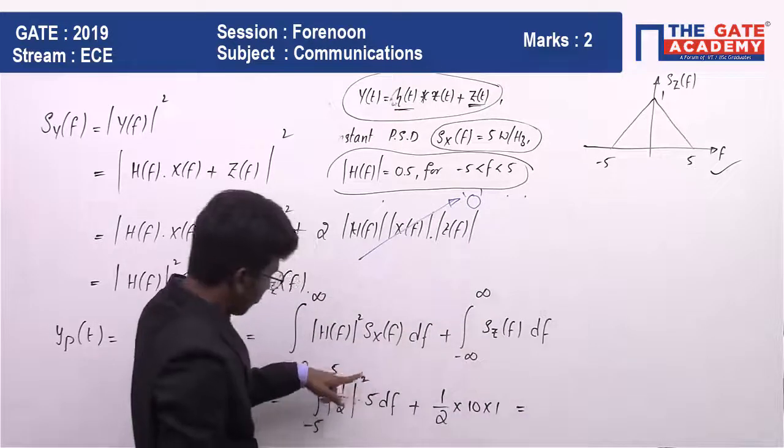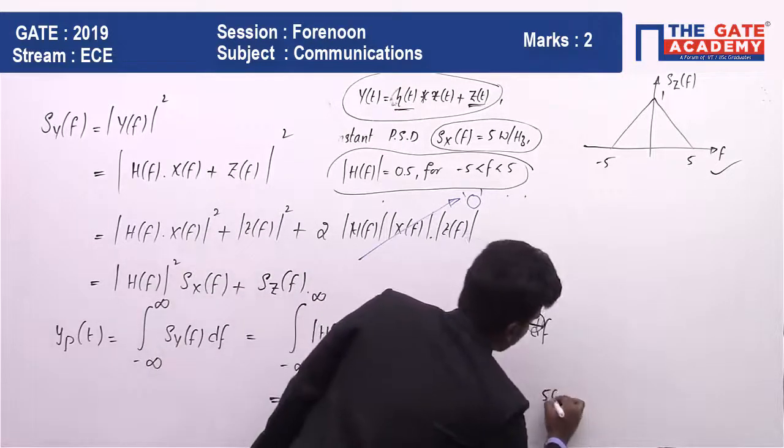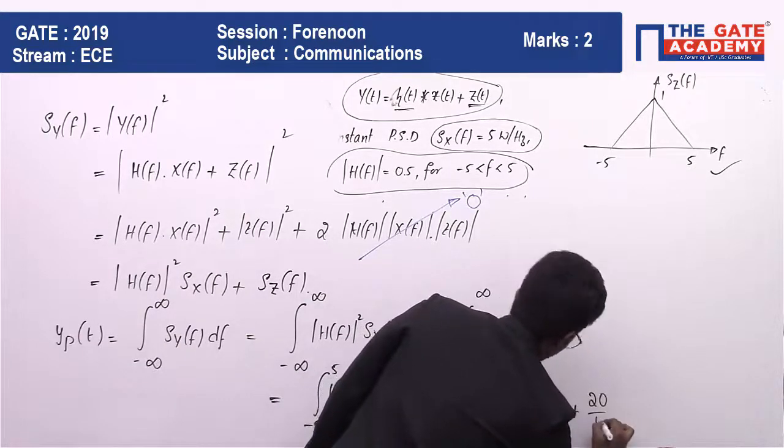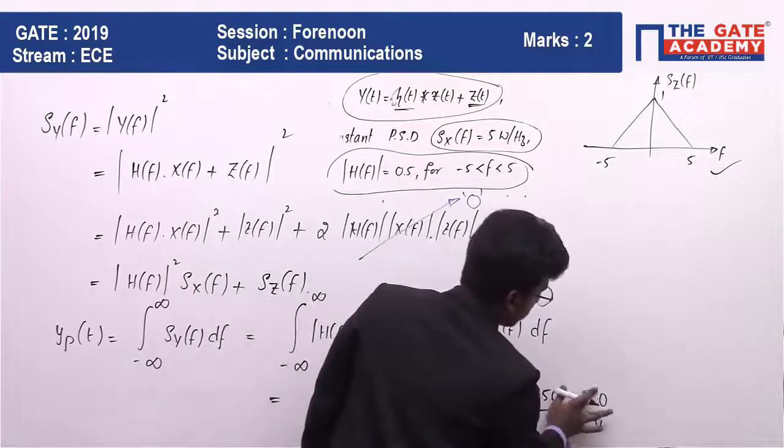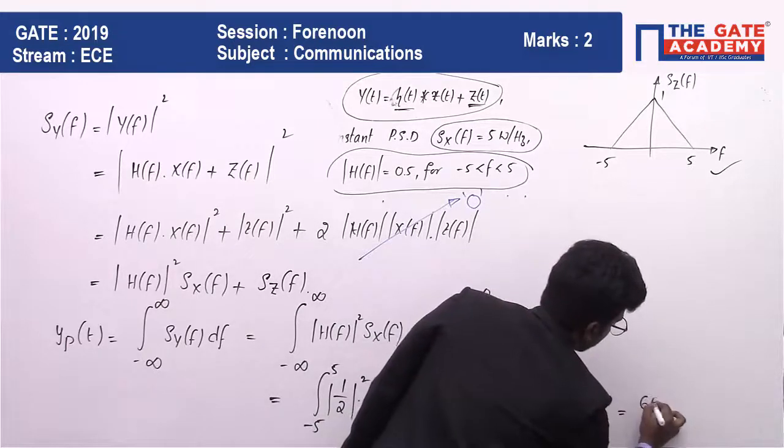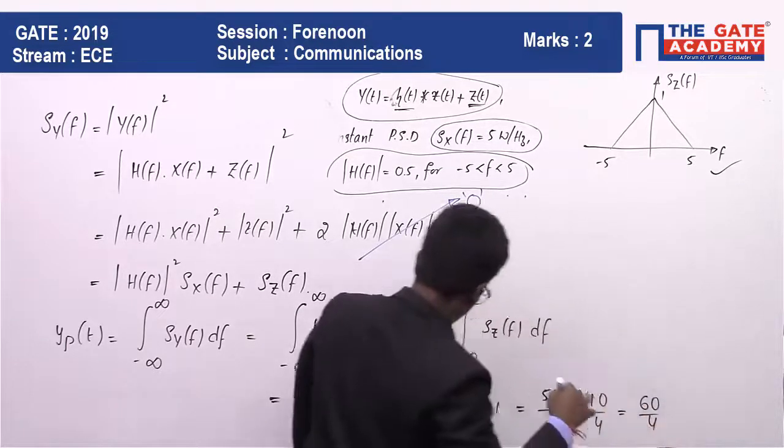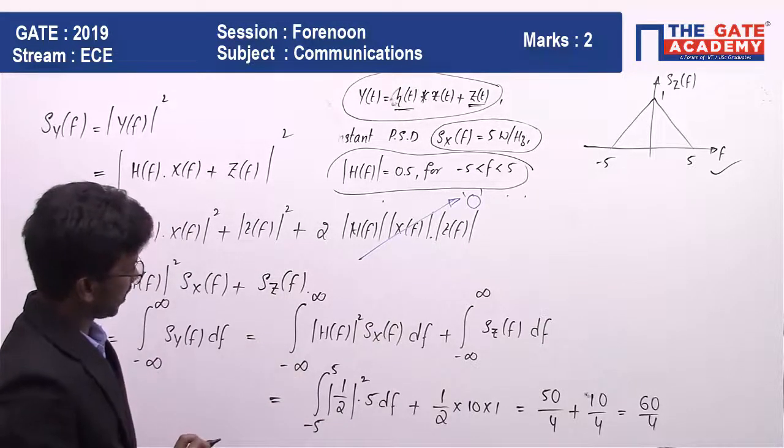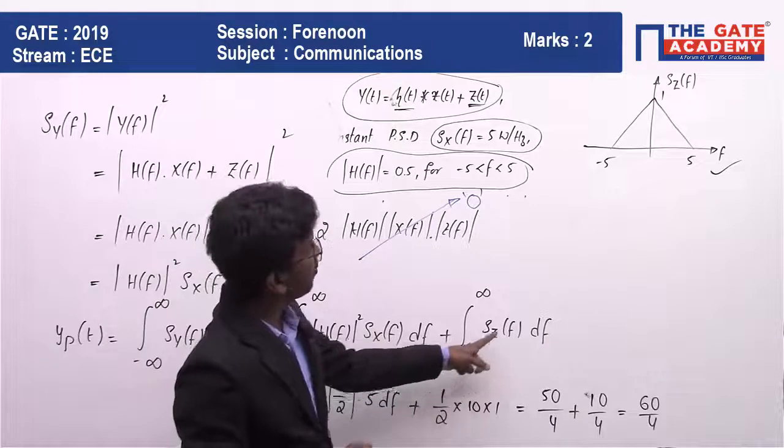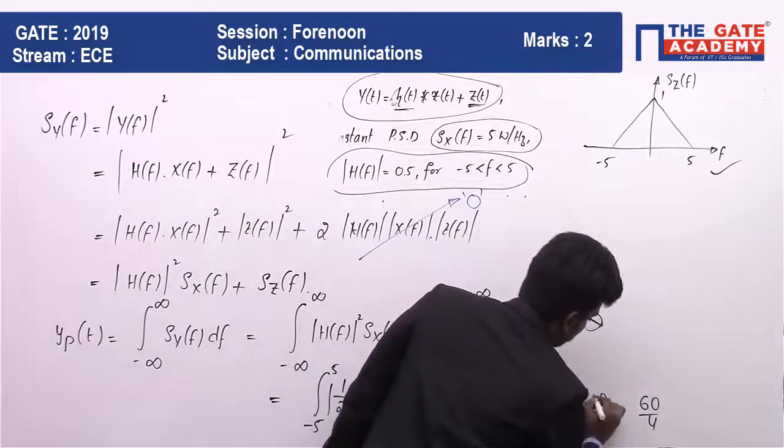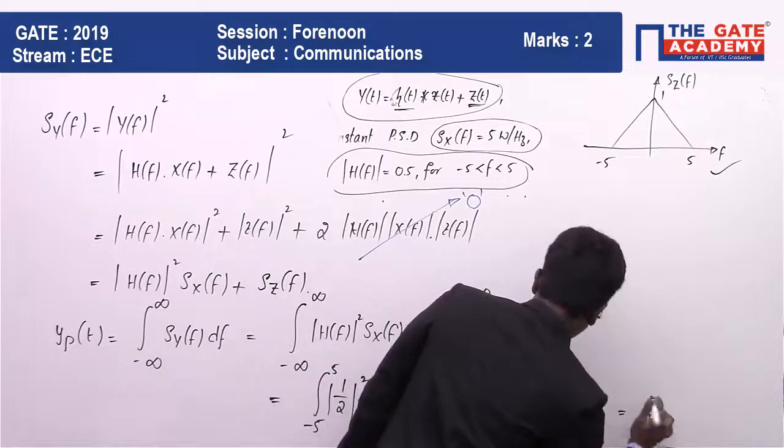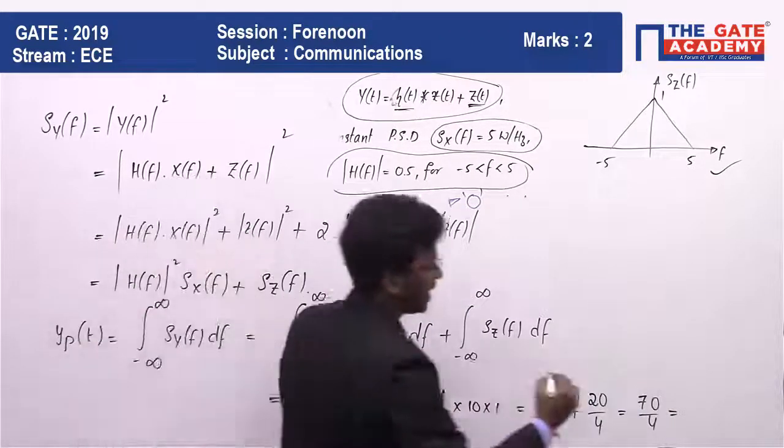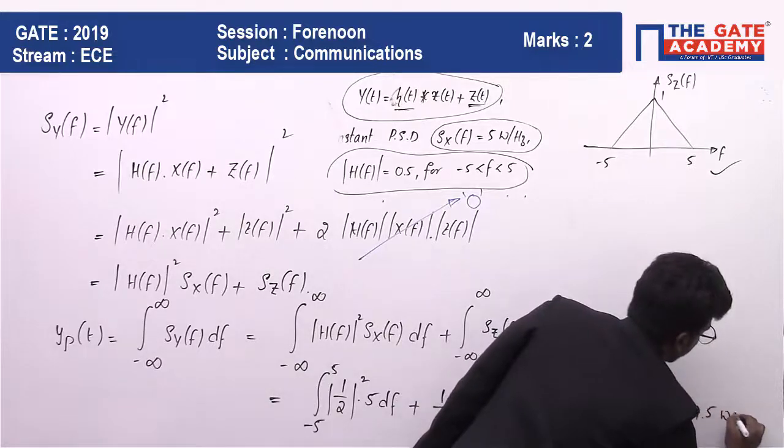Plus area under the triangular transform. Area under triangle is half times base times height: half times 10 times 1, which is 10/2 = 5. So 50/4 plus 10/2, which is 50/4 plus 20/4, equals 70/4.